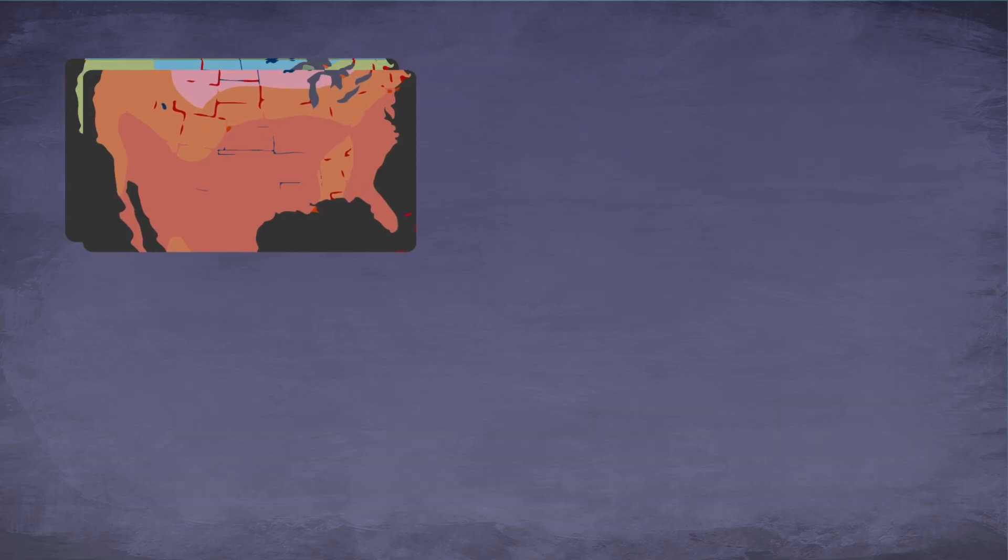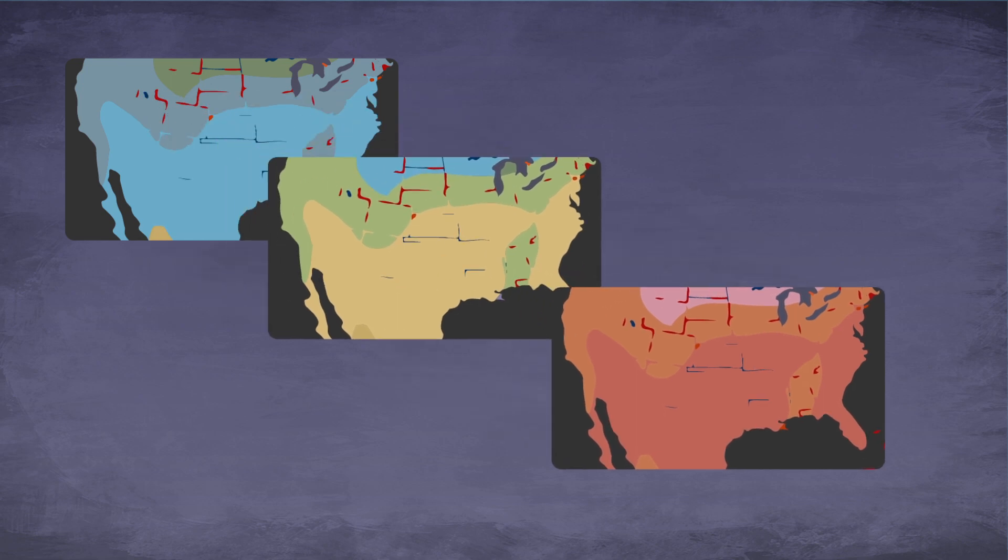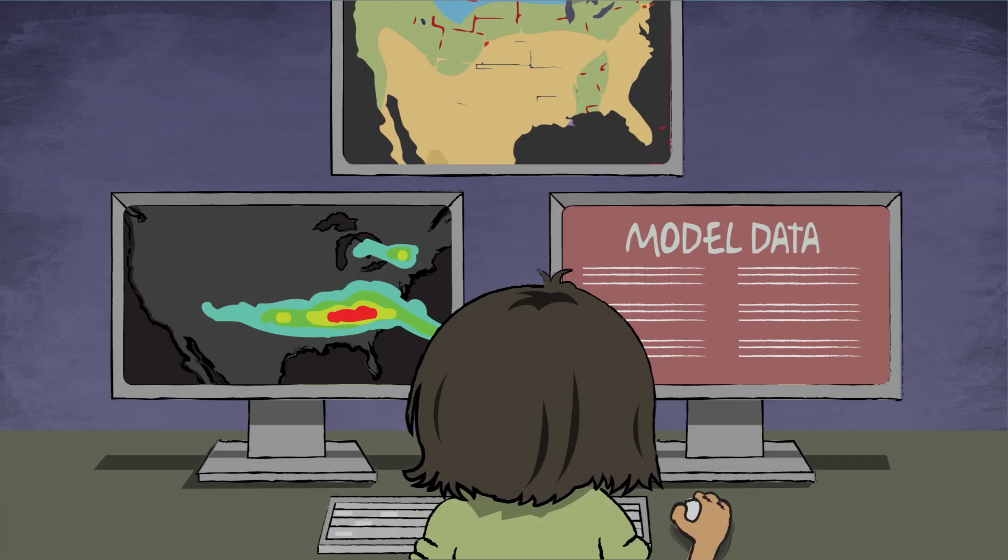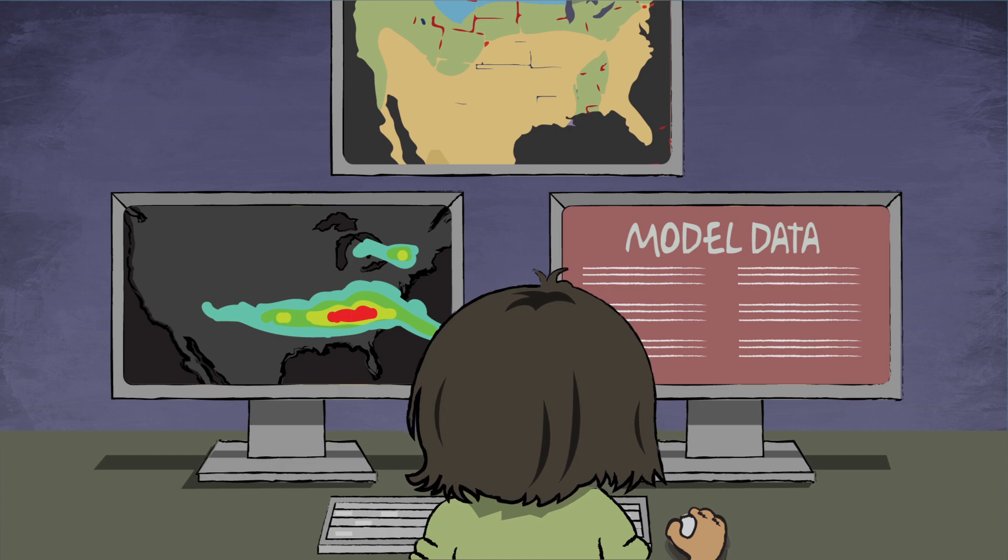The colorful maps and the maps from the forecast offices then go to your local weather forecaster. The forecaster combines the information from these maps with lots of other information like model forecast data and radar data to make predictions about the upcoming weather in your area.